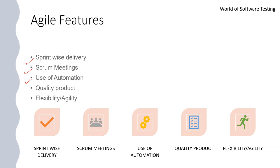The third agile feature is the use of automation. To reduce time and manual efforts, agile methodology uses automation tools to run automated test suites. Instead of manual effort only, we can automate our test cases. Even unit testing can be automated with the help of agile methodology.